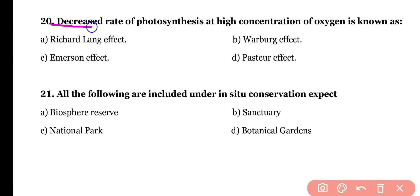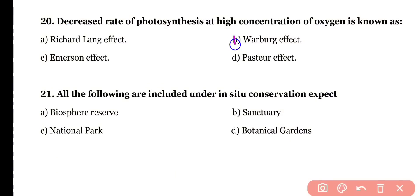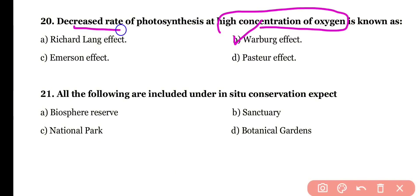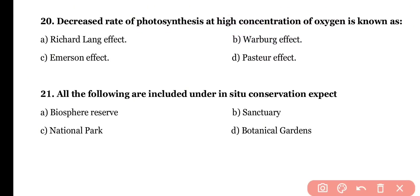Question number twenty: decreased rate of photosynthesis at higher concentration of oxygen is known as (a) Richard Lang effect, (b) Warburg effect, (c) Emerson effect, or (d) Pasteur effect. The correct answer is option B — in the presence of high oxygen concentration, the decreased rate of photosynthesis is known as the Warburg effect.